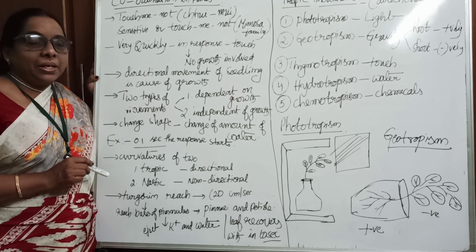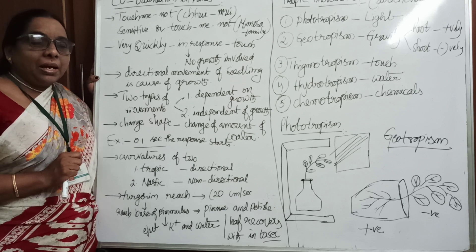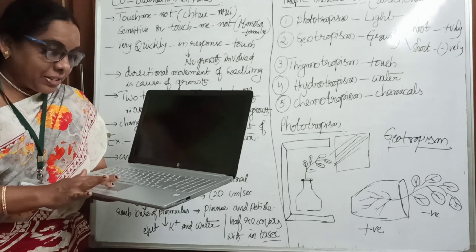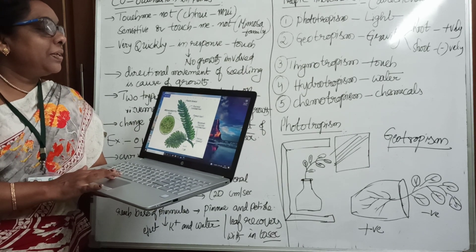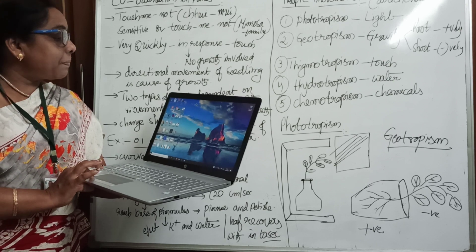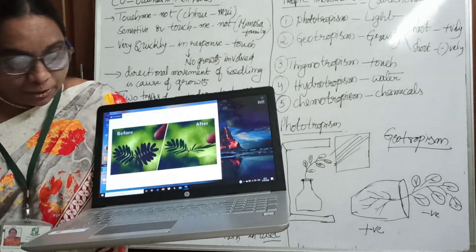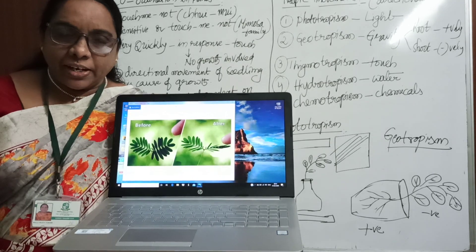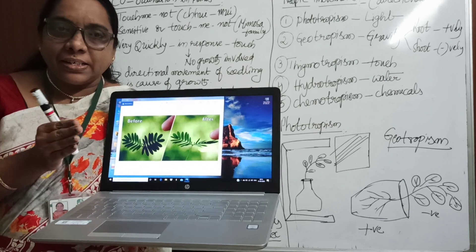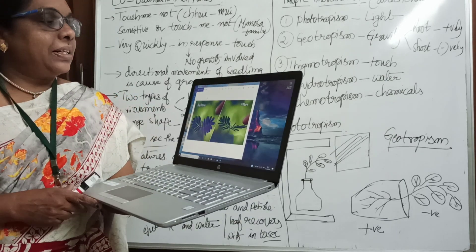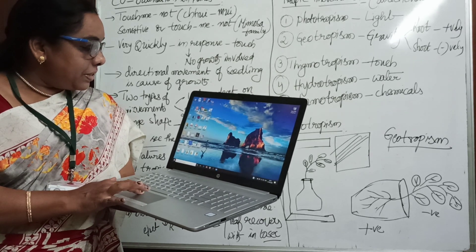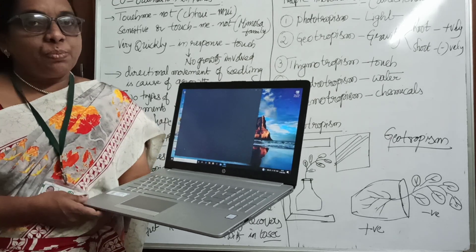When you observe Mimosa pudica — the touch-me-not plant, called 'attipatti' in Telugu — whenever you touch it, the plant closes its pinnules. Before touching, the plant expands its leaf blades. When you touch this plant, the leaf blade comes closer. The question is: what mechanism is involved to close the leaves?